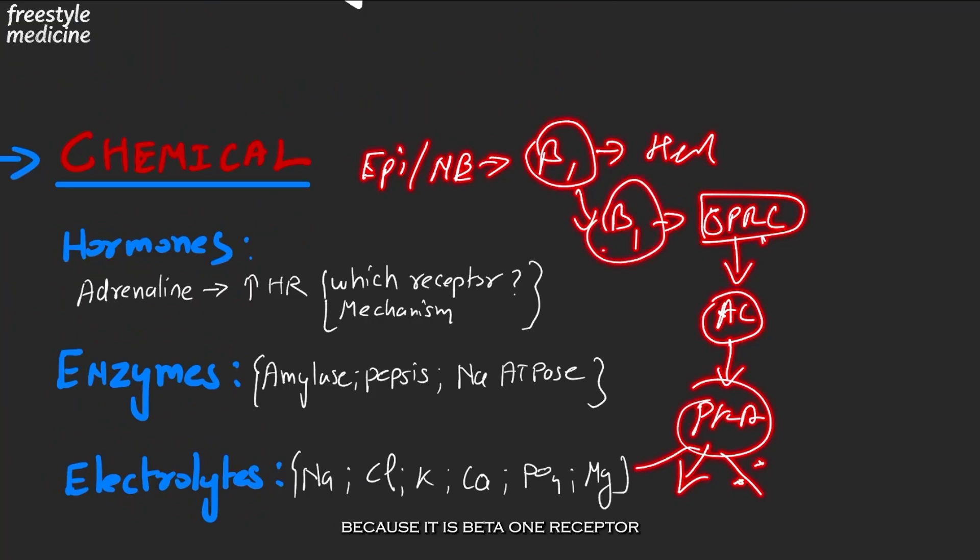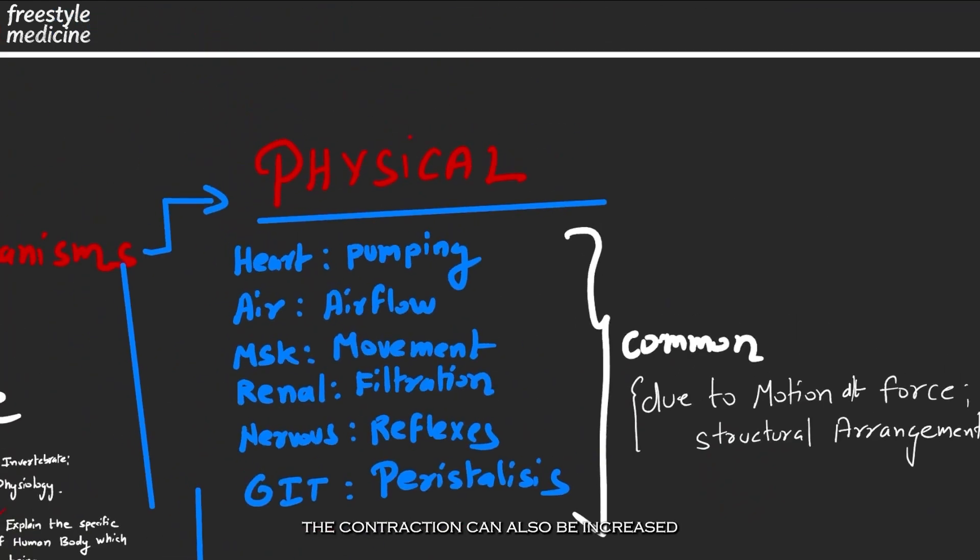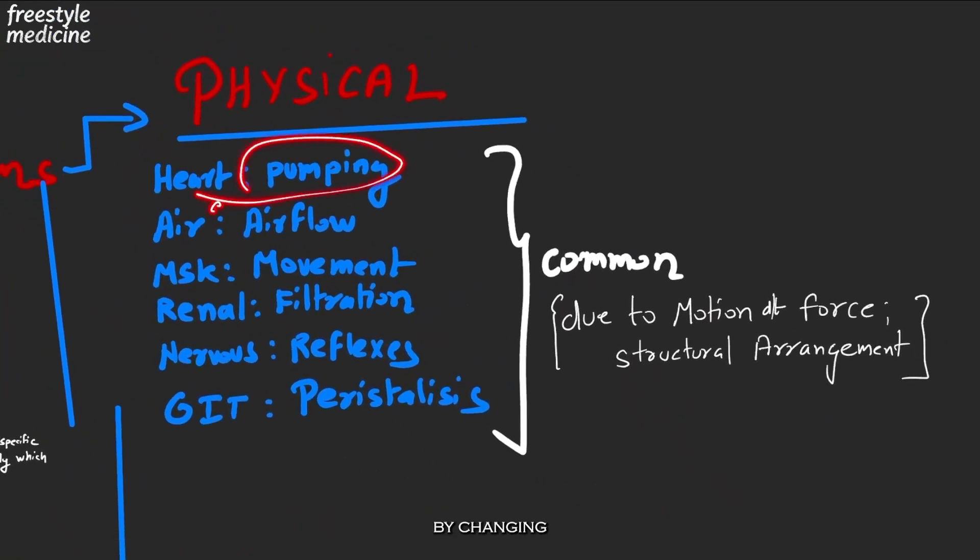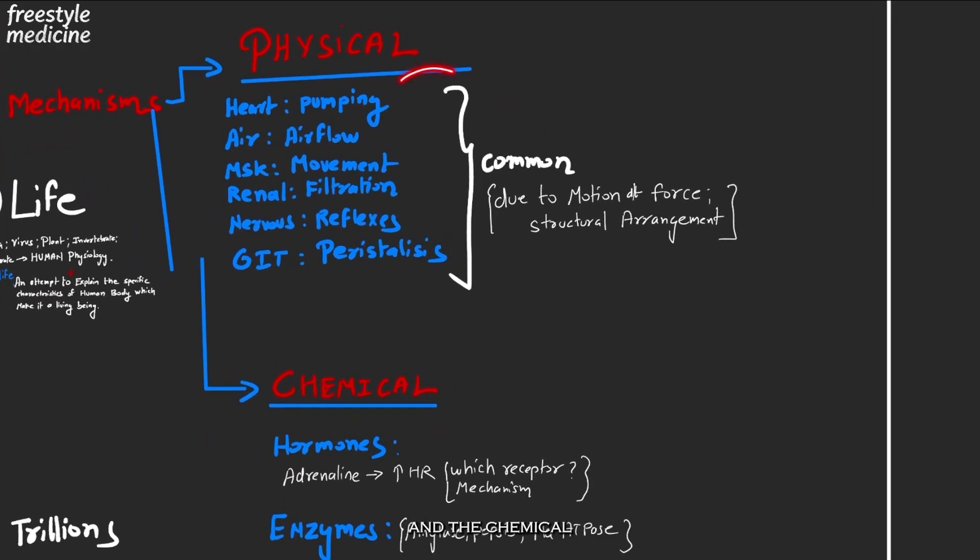And this protein kinase A, depending upon what type of GPCR, will perform different functions. In this case, because it is beta-1 receptor, it will increase the heart rate. Similarly, the contraction can also be increased by increasing the amount of calcium that is coming inside of the heart.